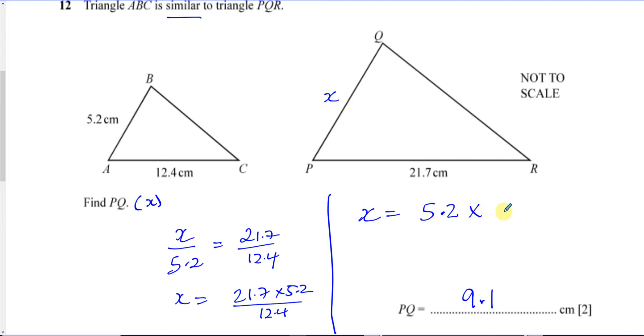Then I ask myself, I make a fraction, and I use two sides which are corresponding to each other that I know, which are AC and PR. They're in the same relative positions. And then I say to myself, is X going to be bigger than 5.2 or smaller?